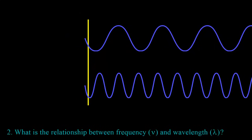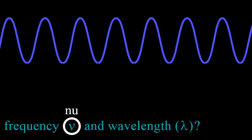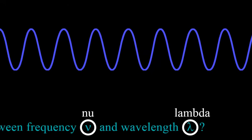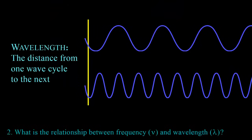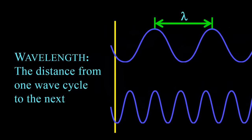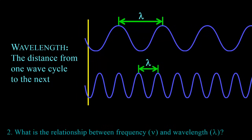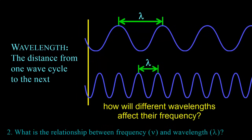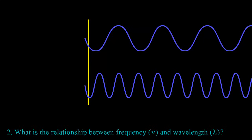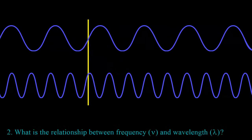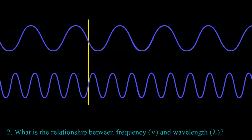Now let's take a look at the relationship between frequency and wavelength. Frequency has the symbol nu, and the symbol for wavelength is the Greek letter lambda. Wavelength is defined as the distance from one wave to the next. You can see here two different waves: the top wave has a longer wavelength, the bottom wave has a shorter wavelength. Both waves will move at the same speed, so how will different wavelengths affect their frequency — the amount of wave cycles passing through the yellow line? You can see that the shorter wavelength flashes more frequently than the longer wavelength.